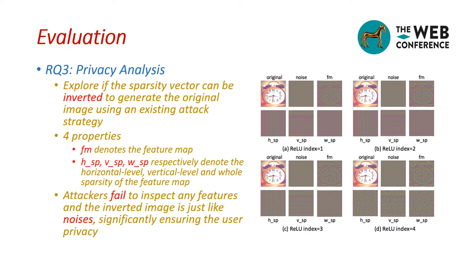For RQ3, we analyze whether the sparsity-based representation can protect user privacy. Concretely, we explore whether the sparsity vector can be inverted to reconstruct the original image using an existing attack strategy. Four properties are utilized to implement the inversion attack at different locations. From the figure, we can observe that attackers fail to recover any features, and the inverted image looks like noise, significantly ensuring user privacy.